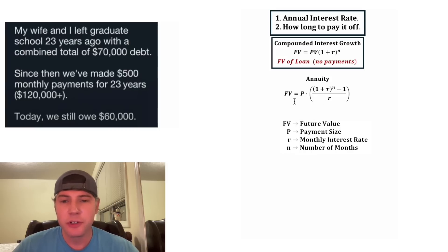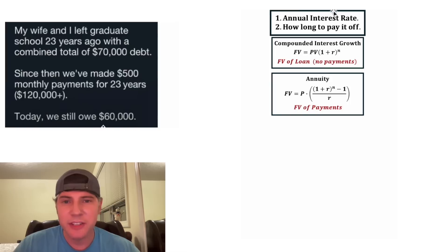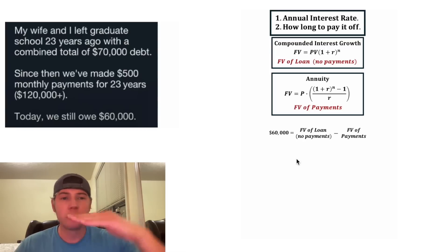And for an annuity, the future value of those payments is equal to the payment size times all of this stuff. And this ends up giving us the future value of the payments. It's a little less intuitive than this one, but it's not too difficult to use it. So now the $60,000 that they still owe today, how can we express this using these formulas? What ends up being the future value of the loan with no payments minus the future value of their payments. So this first part is the loan growing, growing, growing. And the second part is them paying it down. And that's how we get the $60,000.